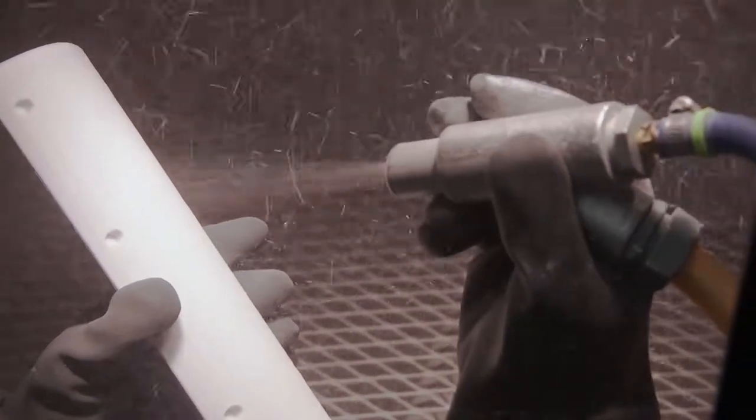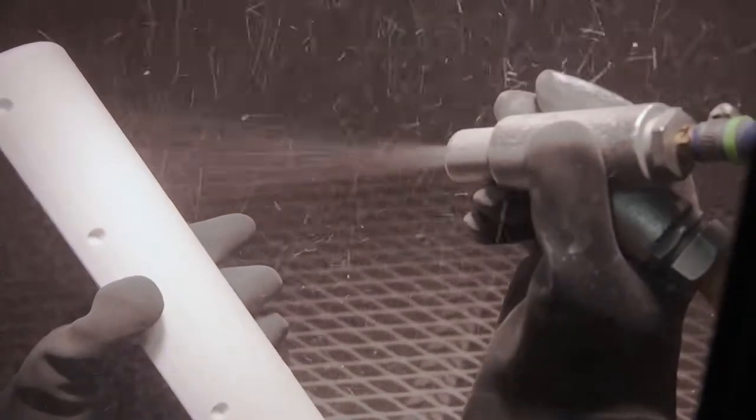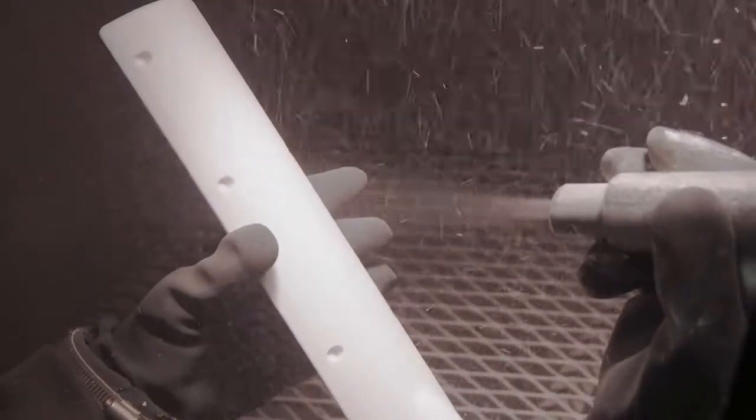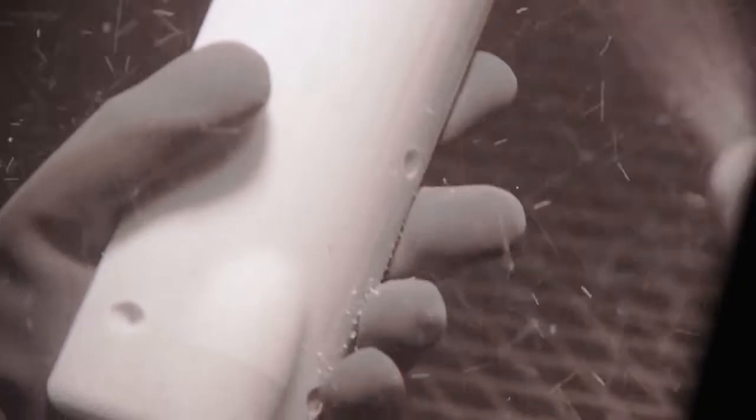Media blast the part using a continuous sweeping motion similar to that for spray painting. To avoid damaging the part, hold the nozzle a minimum of six inches from the part and use several light passes across the part surface. Do not dwell in one area.